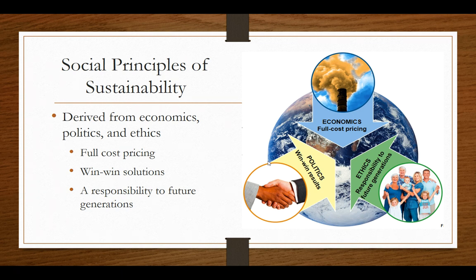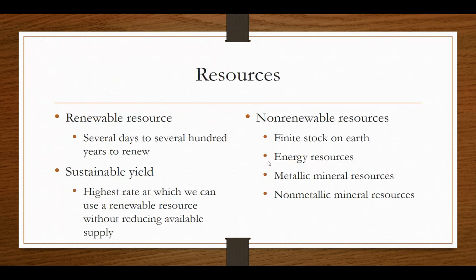The second social principle of sustainability is a win-win solution — finding solutions that benefit both people and the environment. The third is responsibility to future generations, thinking about our actions to serve the generations to come. All of these approaches take into account the triple bottom line in order to sustain our future.